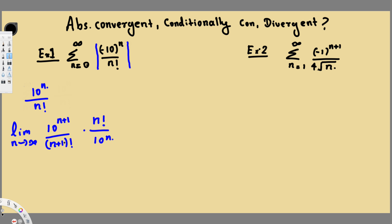Let's solve this. We have 10 power n, and 10 power (n+1) is the same as 10 power n multiplied by 10 power 1. So we can cancel the 10 power n terms, leaving 10 power 1, and in the denominator we have (n+1) factorial.